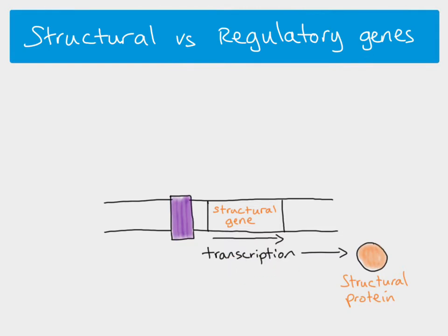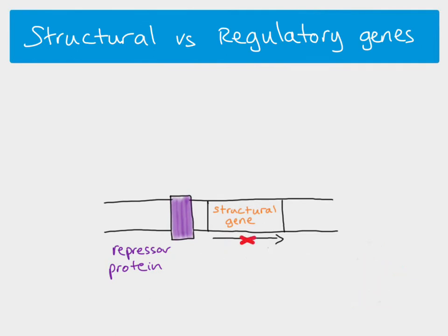Genes can be turned off and turned on. If the gene is expressed, the gene is turned on; if we turn the gene off, it's no longer expressed and the protein will not be produced. The way the cell does this is by using a repressive protein — shown here in purple — which binds to the DNA just above where the structural gene is, preventing transcription from taking place and so the structural protein is not produced.